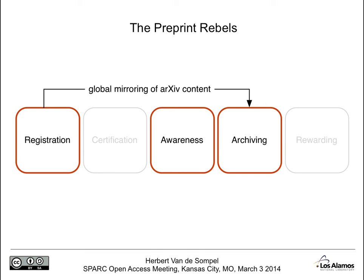The preprint rebels actually also cared about archiving, as exemplified by the global mirroring of arXiv content, the physics archive. That is not done in a way that is interoperable across many systems involved in registration and archiving, but rather in an archive-specific manner. Still, it's a neat example of how early on, with the preprint movement, people already understood that materials that get registered also need to be archived.